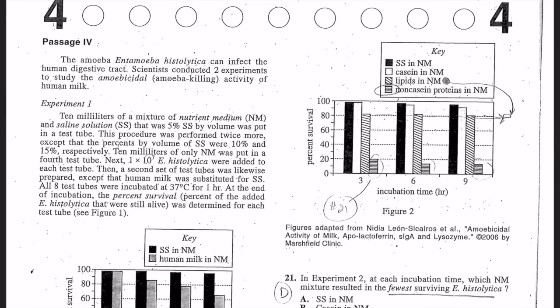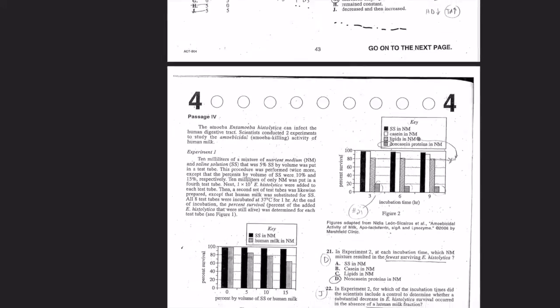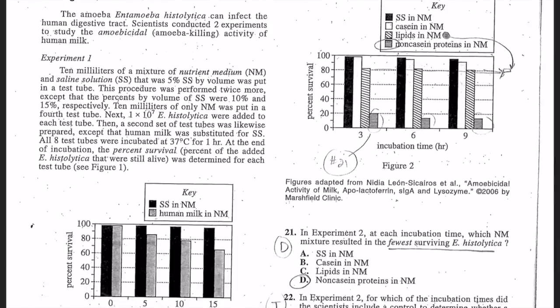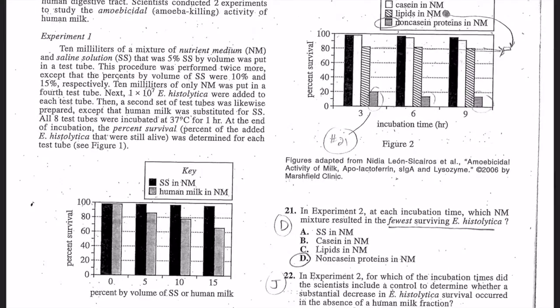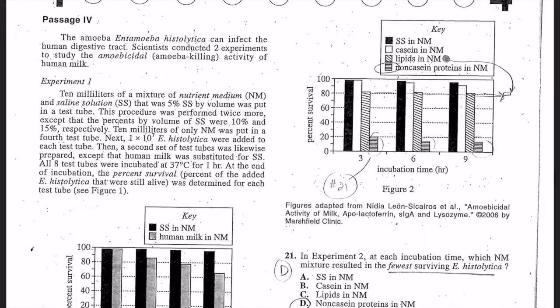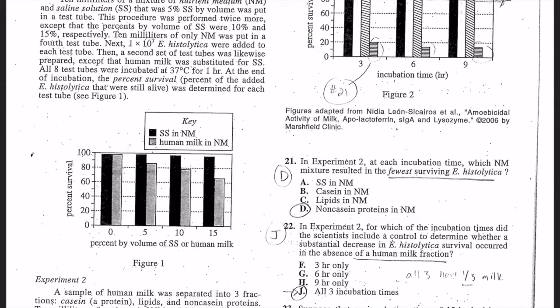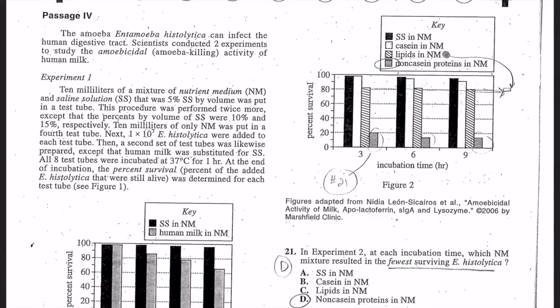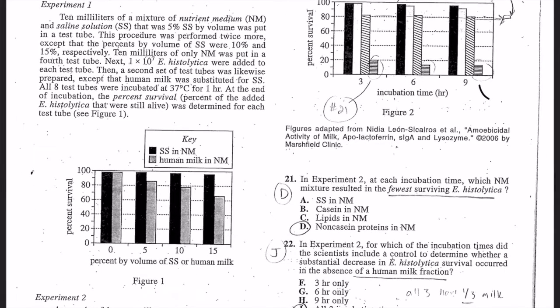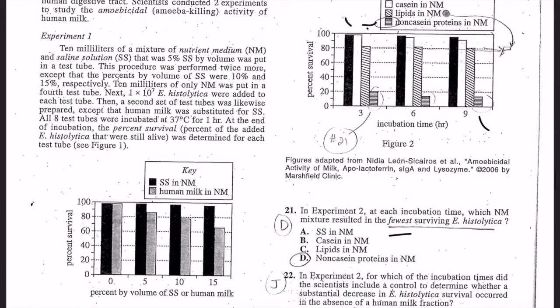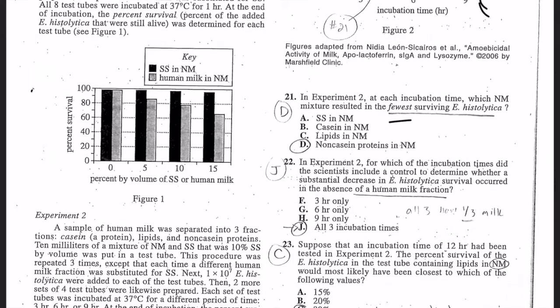Here's passage four. I'm going to give you a moment to pause and look at it. There's an amoeba, Entamoeba histolytica, can infect human digestive system. I'm going to look at this data before I do anything else. What goes down is the percent survival - when you add human milk it kills things. The same thing here: the non-casein protein has lowest percent survival. So I guarantee you the highest and the lowest will be a question. I think it's number 21. There it is. In experiment two, the fewest surviving was the non-casein proteins.